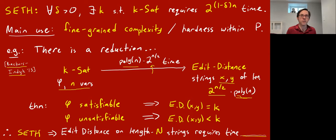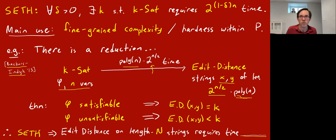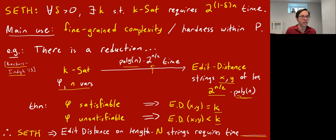The reduction takes a k-SAT instance and outputs two enormous strings. The theorem is that if φ is satisfiable, the edit distance between the two strings will be some number k that the reduction can also output; if φ is unsatisfiable, the edit distance will be at most k − 1. This shows that if you can solve edit distance, you can solve k-SAT. The SETH assumption is about how long it takes to solve k-SAT, so you can actually deduce something about how long it takes to solve edit distance. What can you conclude about how long it takes to solve the edit distance problem on length capital-N strings?